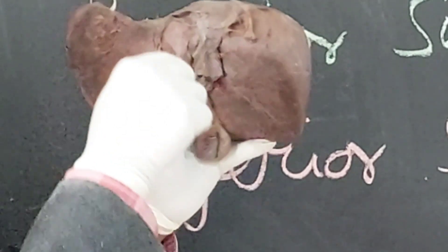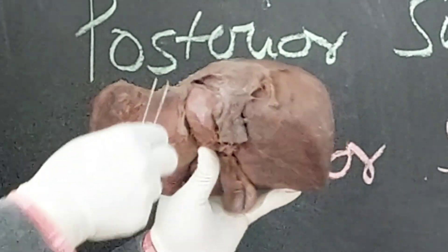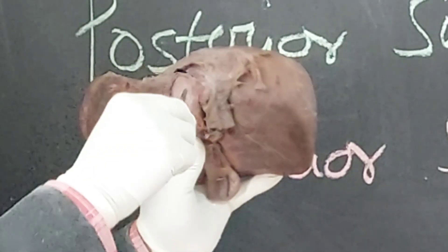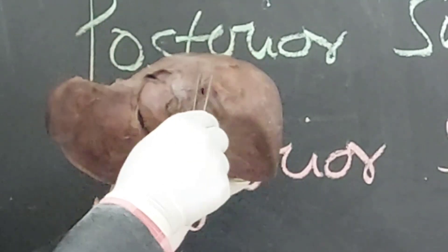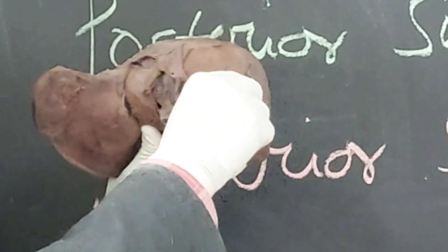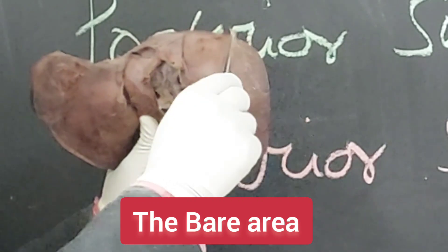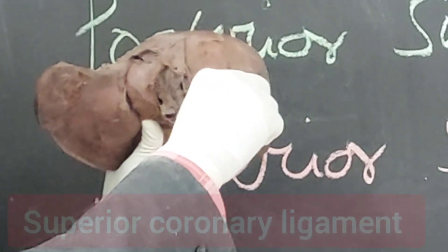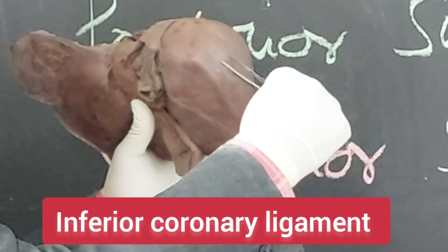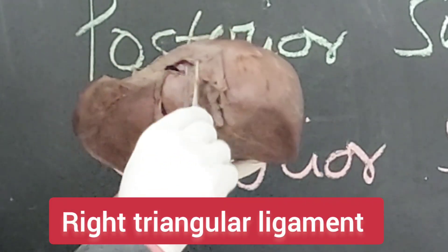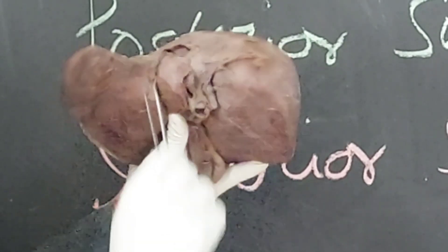In the floor of this fossa or groove, you will get the hepatic veins which are piercing this fossa and entering into the inferior vena cava. And on the right side of the groove for the inferior vena cava, you will get the largest bare area of the liver. That is called the bare area, which is a triangular separate area bounded superiorly by the superior coronary ligament, inferiorly by the inferior coronary ligament, and these two ligaments fuse together to form the right triangular ligament. The base is formed by the groove for the inferior vena cava.